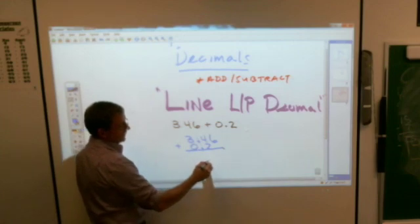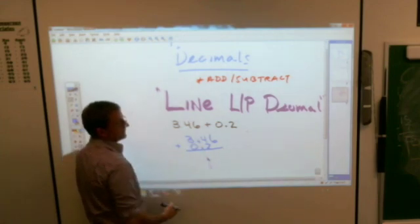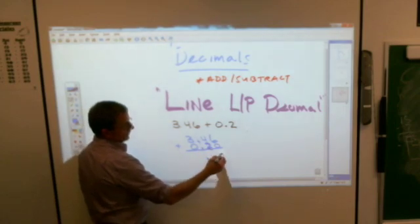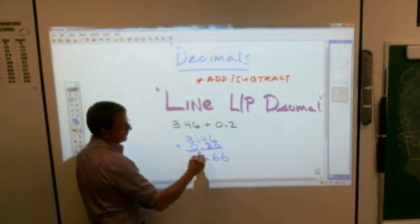And then in your answer, the decimal gets lined up on that same thing as well. You can always fill in empty decimal spaces with zeros. If it helps you, this would be 6, this would be 6, this would be 0.66.